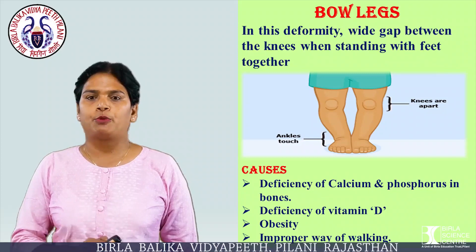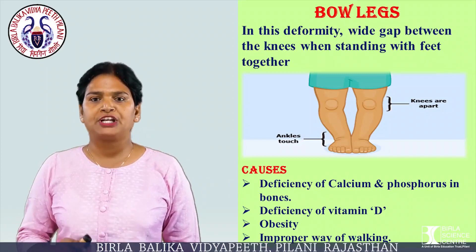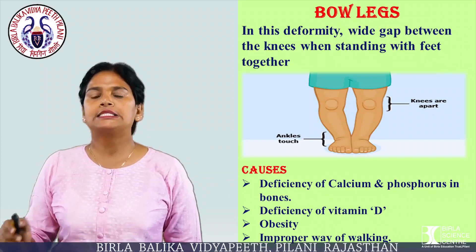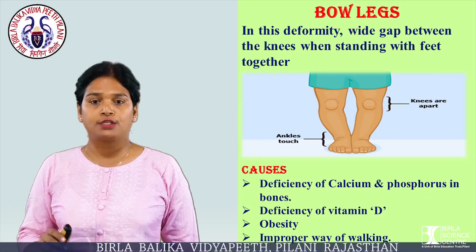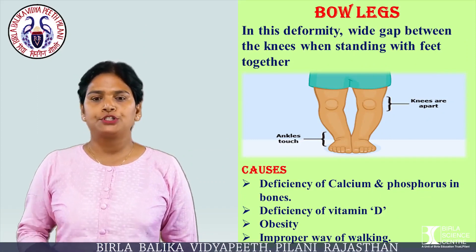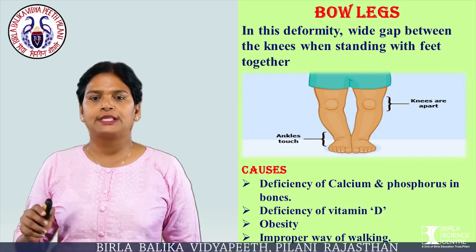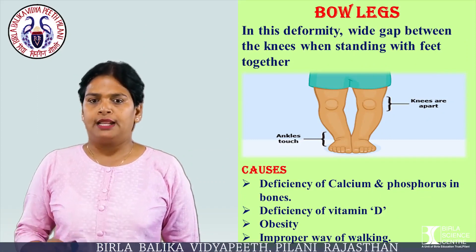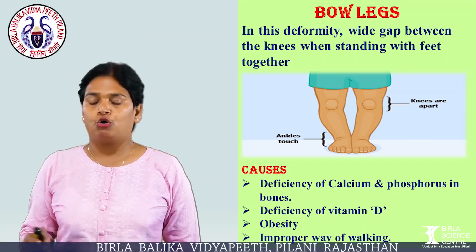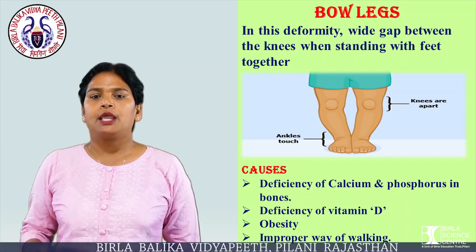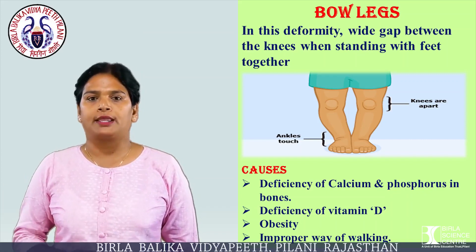Bow Legs. In this deformity, there is a wide gap between the knees when standing with feet together. Causes: deficiency of calcium and phosphorus in bones, deficiency of vitamin D, obesity, and improper way of walking.